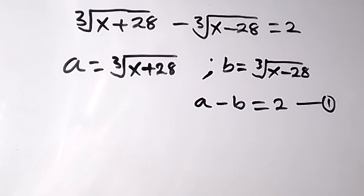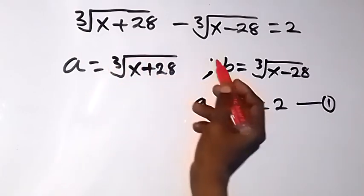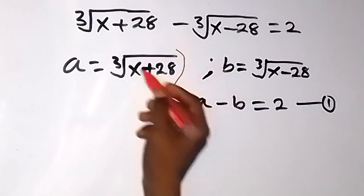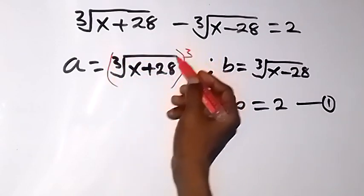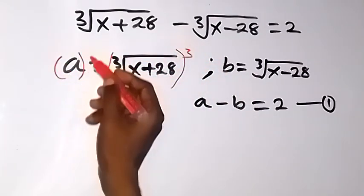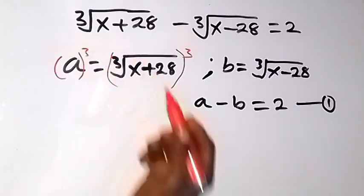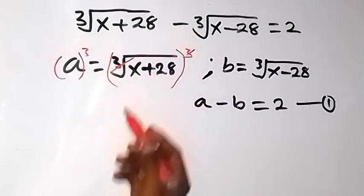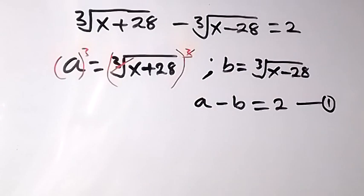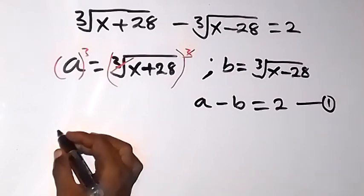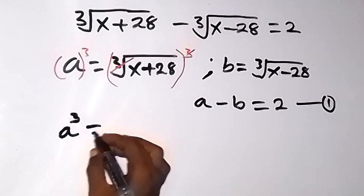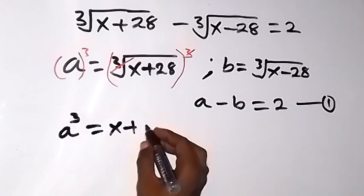Also from here, in order to cancel the cube root, let's introduce cube. And when we introduce cube on this side, we must also introduce cube raised to power 3 on the other side. The cube will cancel cube root, and what we have left will now be a raised to power 3. That's a cubed equals to x plus 28.